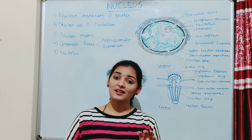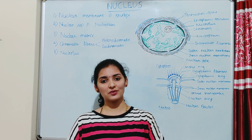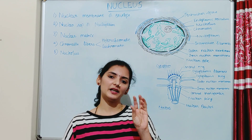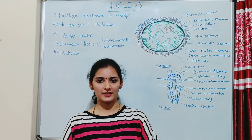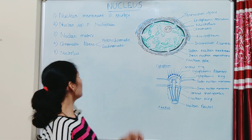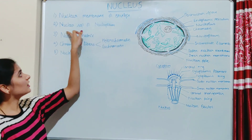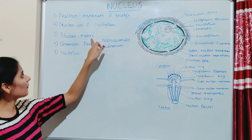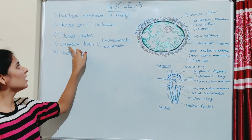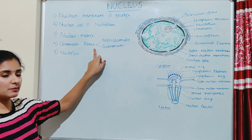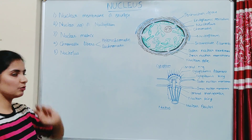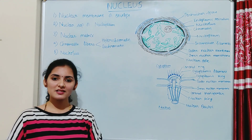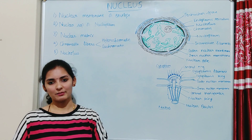If we study the ultrastructure of a nucleus, it consists of mainly five parts: nuclear membrane, nuclear sap, nuclear matrix, chromatin fiber, and nucleolus. We will discuss those parts one by one.